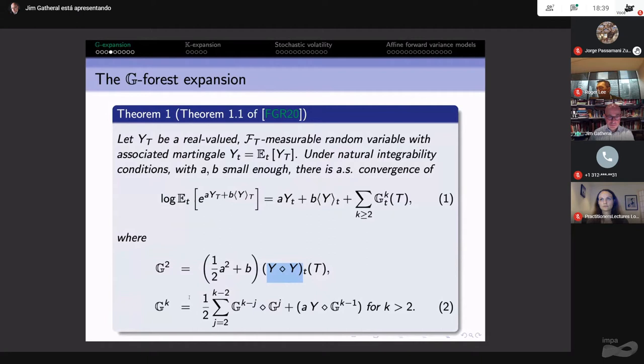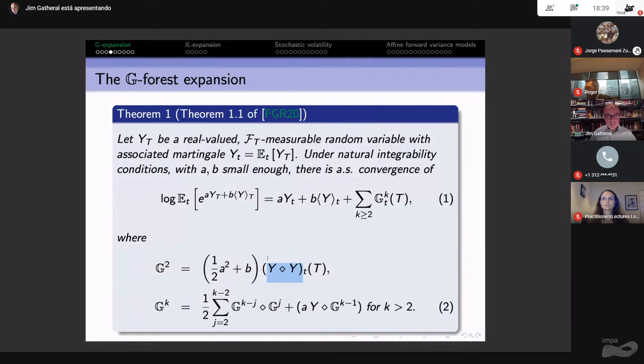For example, G of 3 would give you Y diamond G of 2. You can see that G of 3 is going to be something like Y diamond Y diamond Y with some coefficient. How does this thing get proved? The proof is so simple that I think you could memorize it. You could definitely give it to undergraduates.